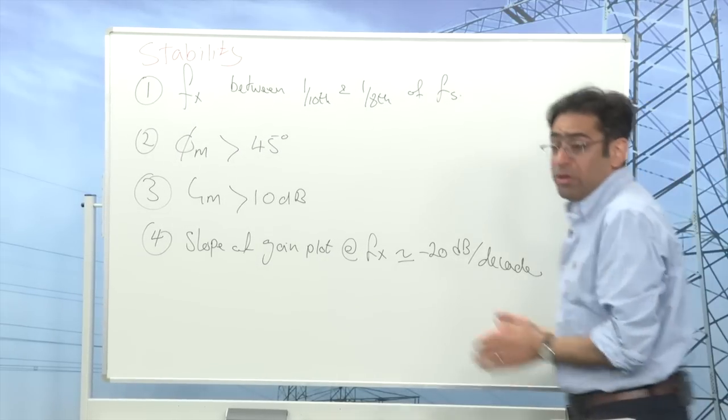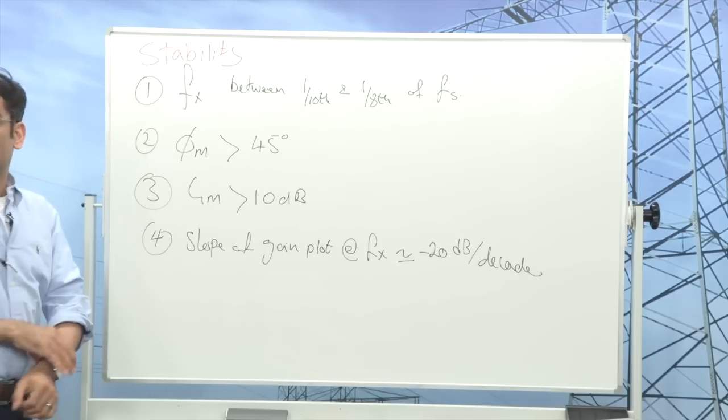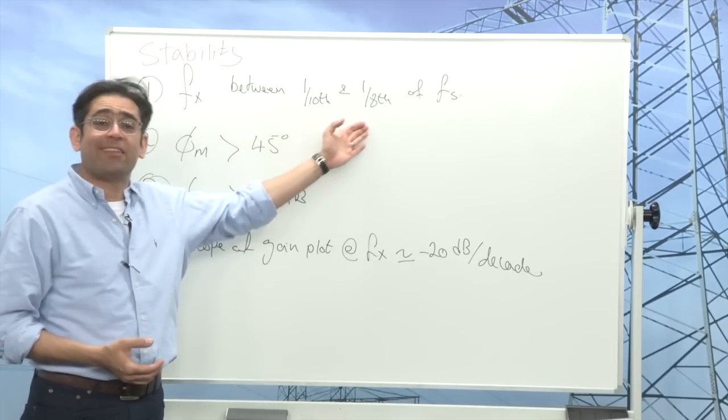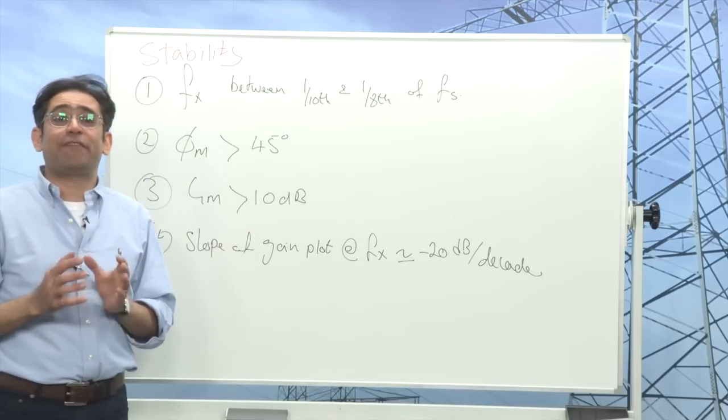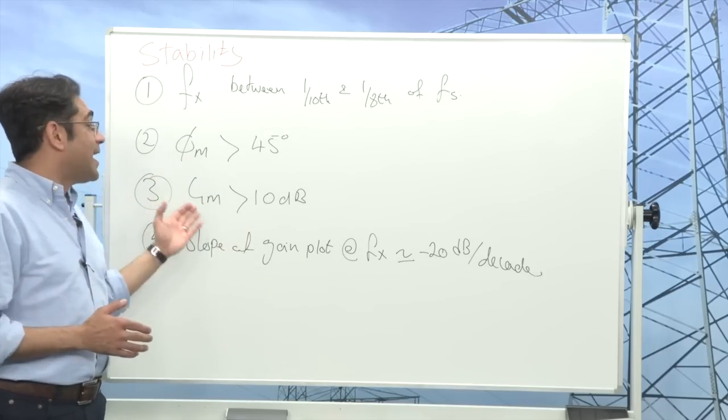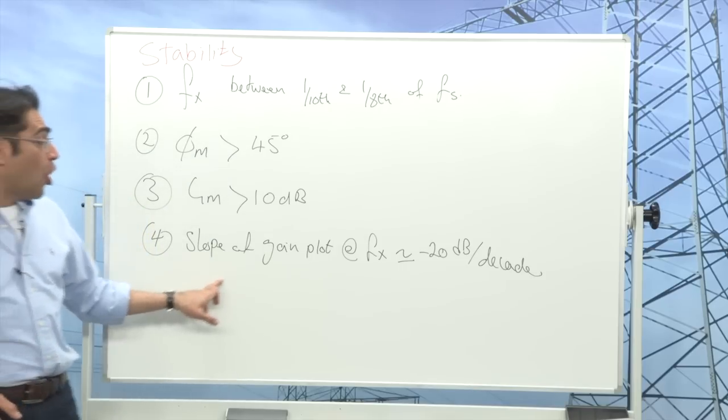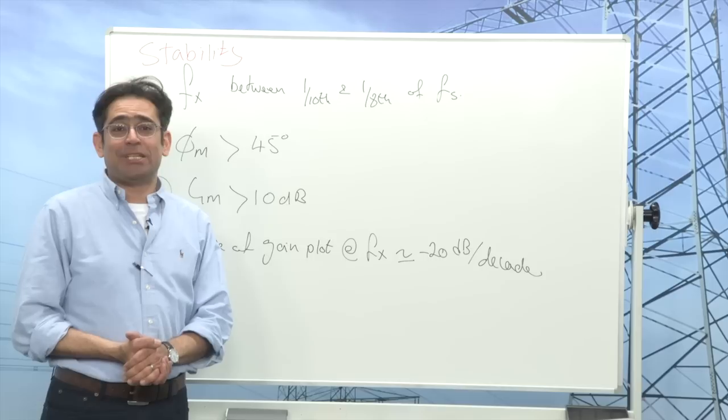So in order to have a nice stable power supply, what ideally we would like is a crossover frequency which is between one-tenth and one-eighth of the switching frequency, a phase margin which should be better than 45 degrees, a gain margin of better than 10 dBs, and the slope of the gain plot at crossover frequency should be around minus 20 dB per decade.